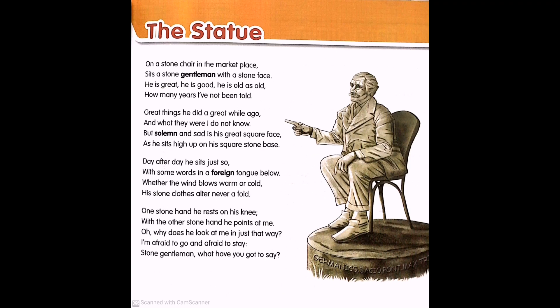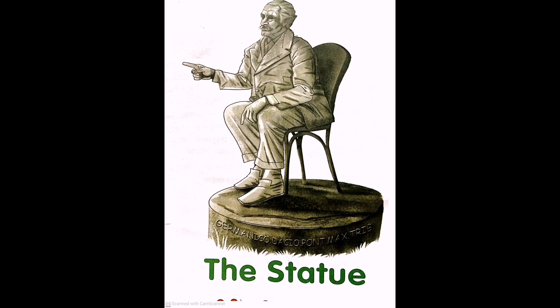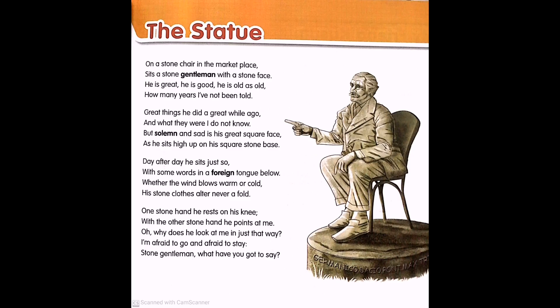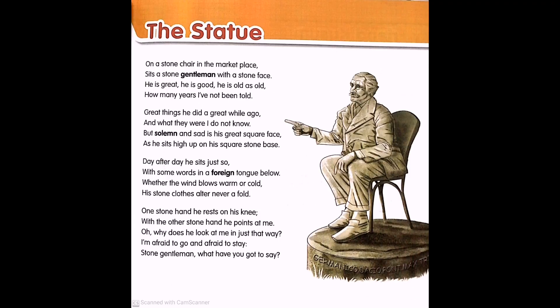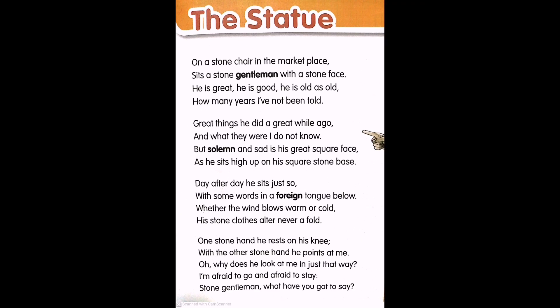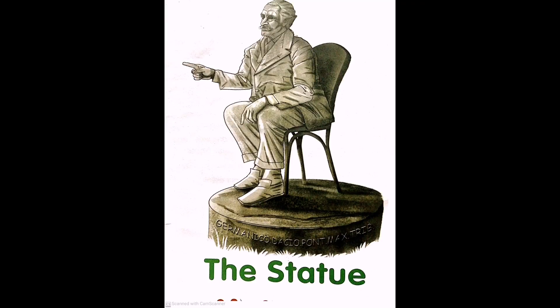The poem really describes the statue in the marketplace, though the poet doesn't use the word 'statue' throughout the poem. We know he is describing a statue after reading it. The poet described the statue's face, hands, expression, posture, clothes, action, age, and character traits, using vivid adjectives to describe all these elements.